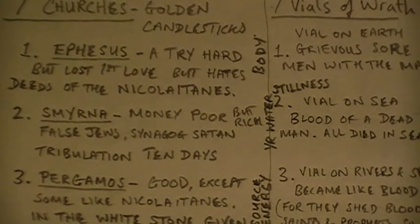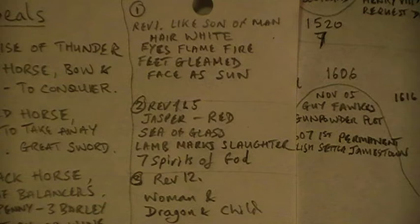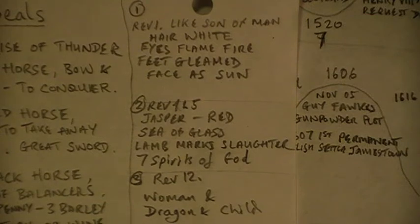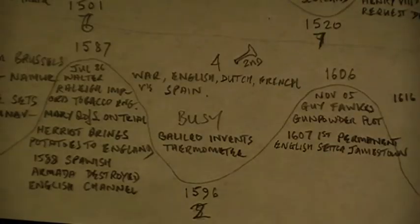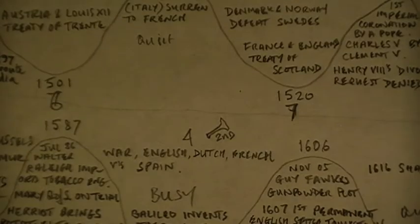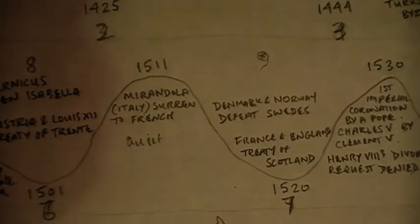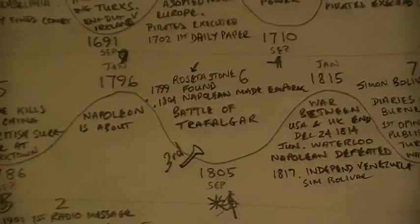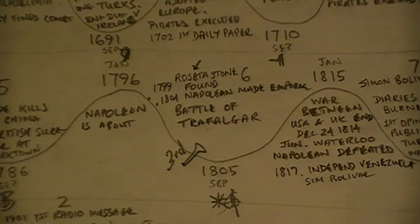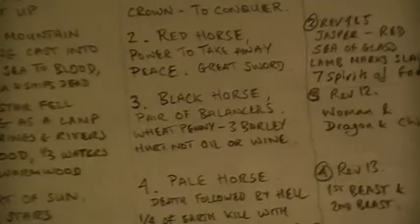The next prime number is 11, and when we count 11 from there — boom — it lands on Napoleon. Napoleon doesn't seem to be around that long, but he's certainly significant and he's in Nostradamus. It really does feel like it fits: 'this great star fell burning as a lamp.'